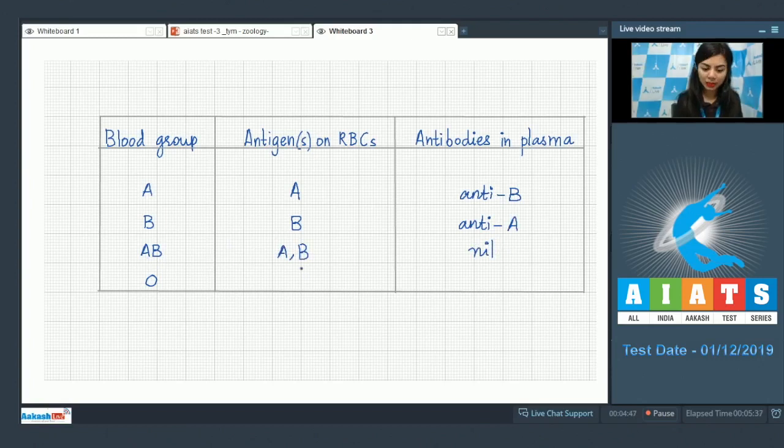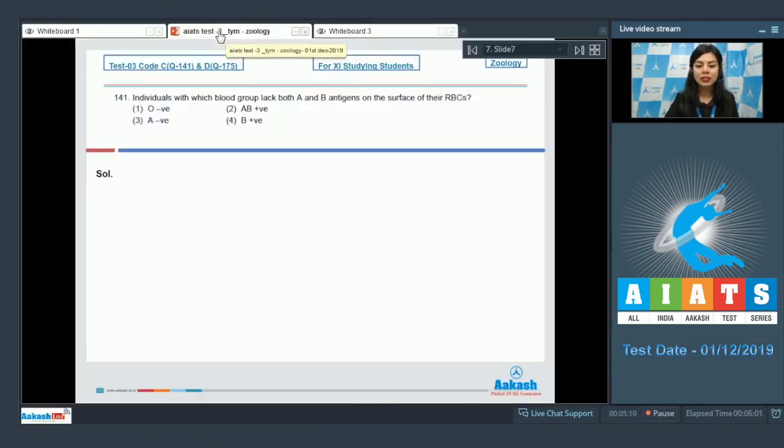For individuals with O blood group, there are no antigens on the RBCs, whereas antibodies present are both anti-A and anti-B antibodies. So here we can see for blood group O, the individual would have none of the antigens on its RBCs. The correct answer here would be option number one, O negative.